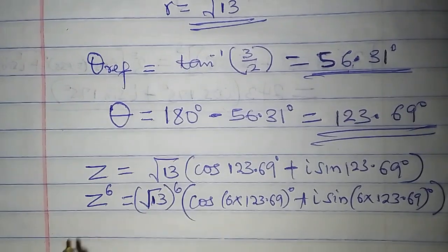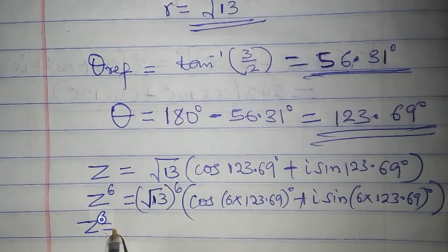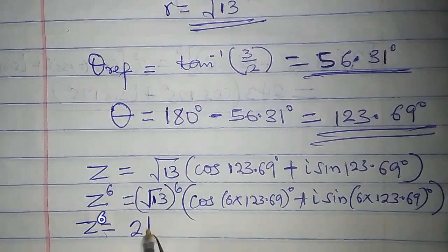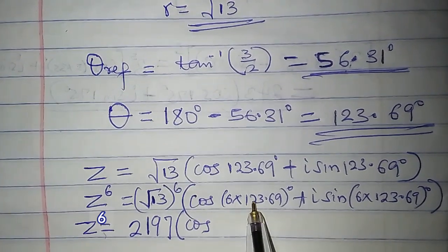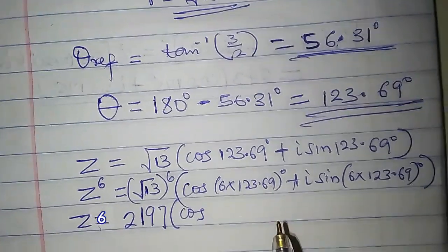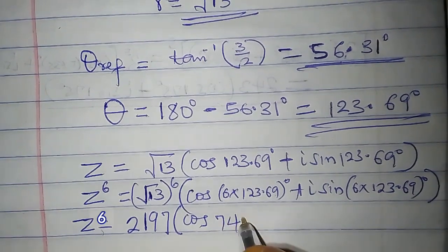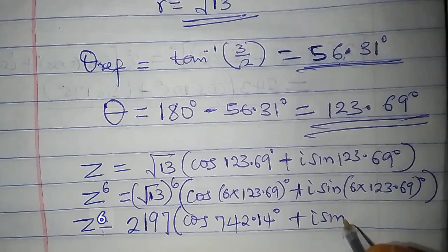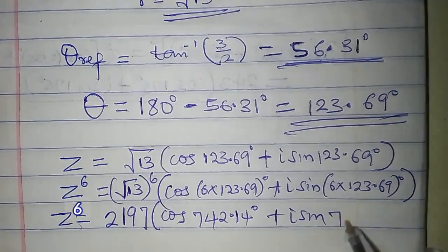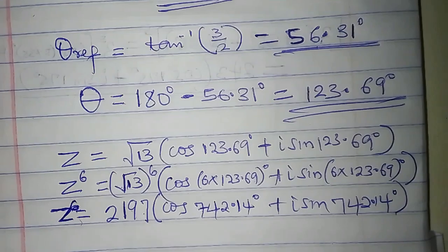Root 13 to the power of 6 is 2197. Cos 6 times 123.69 is 742.14, so we have 2197 times cos 742.14 degrees plus i sine 742.14 degrees. This is z to the power of 6.